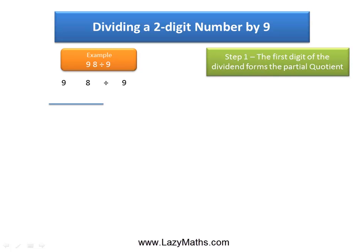Now the first step is to simply take the first digit of the dividend 98, in this case 9, and call it as Q1 or partial quotient Q1.